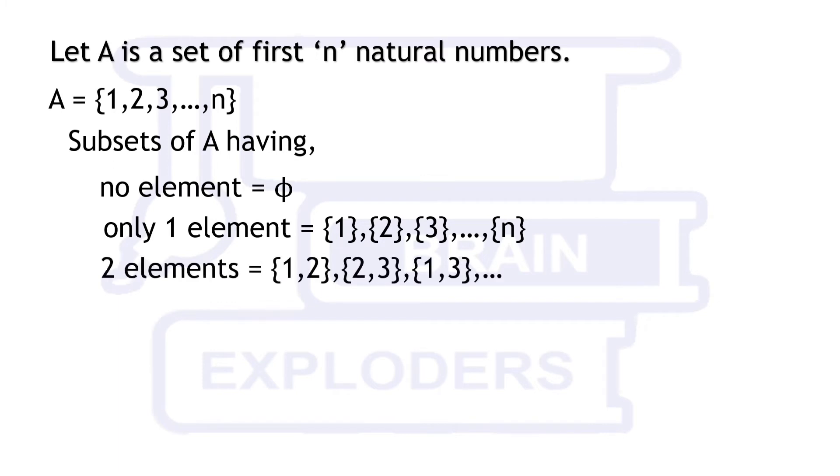If we make subsets by selecting exactly 2 elements at once then the number of subsets are equal to the number of ways of selecting 2 elements from n. Similarly, we can make other subsets.